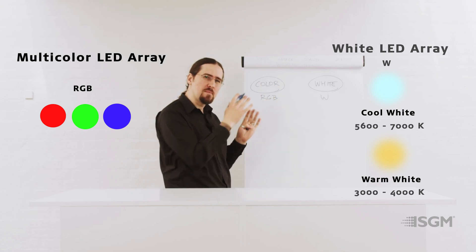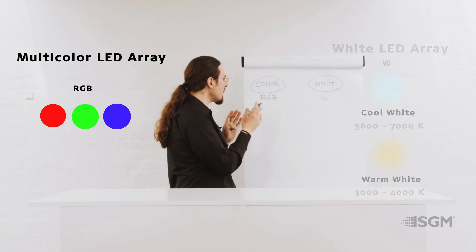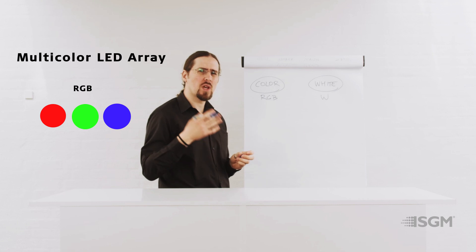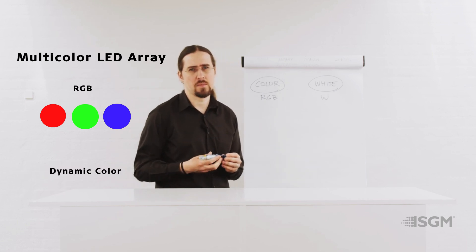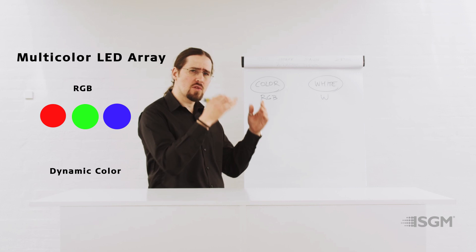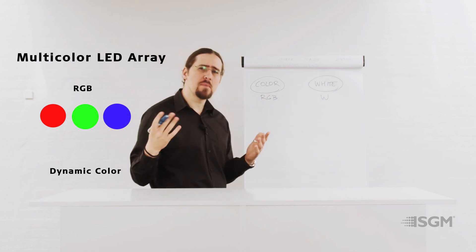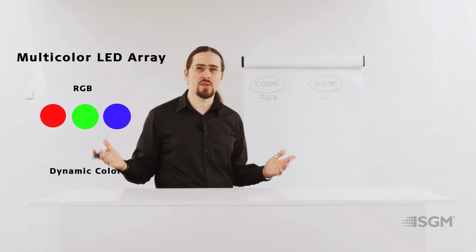So RGB is the base of all of them. When you have RGB, this is what we normally call dynamic color mixing. So basically you use the red, the green, and the blue as an additive mixing to generate any color that you might need.